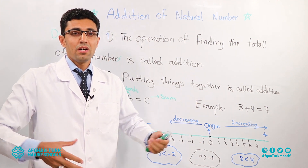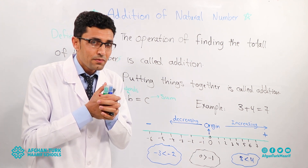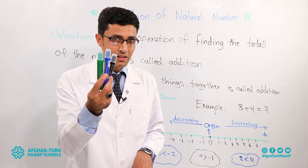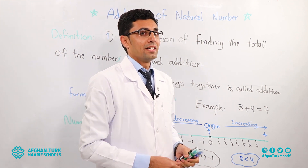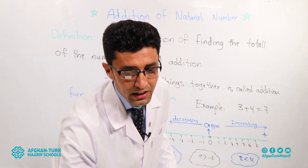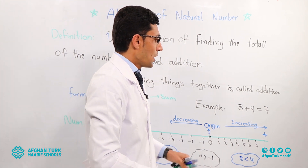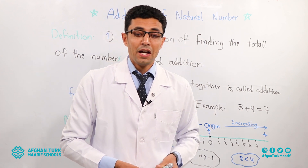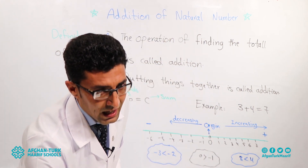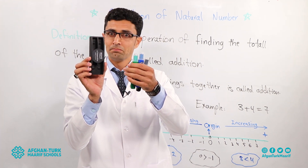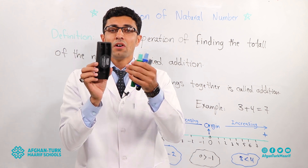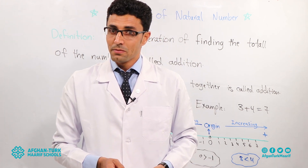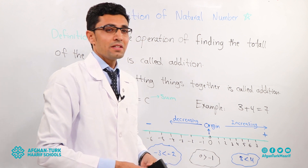Now we have an example — we are going to put things together and find the total. For example, I have three markers and my brother gave me four markers. How many markers do I have? Four plus three is seven. Is it possible that I add three markers with one duster? No, because these are not equal type. Can potatoes be added with tomatoes? No — that is not possible.